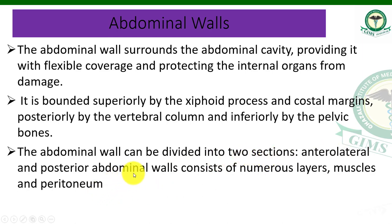The abdominal wall can be divided into two sections: the anterior-lateral section and the posterior abdominal wall. We have studied directional terms at the start of the chapters — anterior is the front side and posterior is the back side. These two walls together make up the abdominal walls, which consist of numerous layers, muscles, and peritoneum.